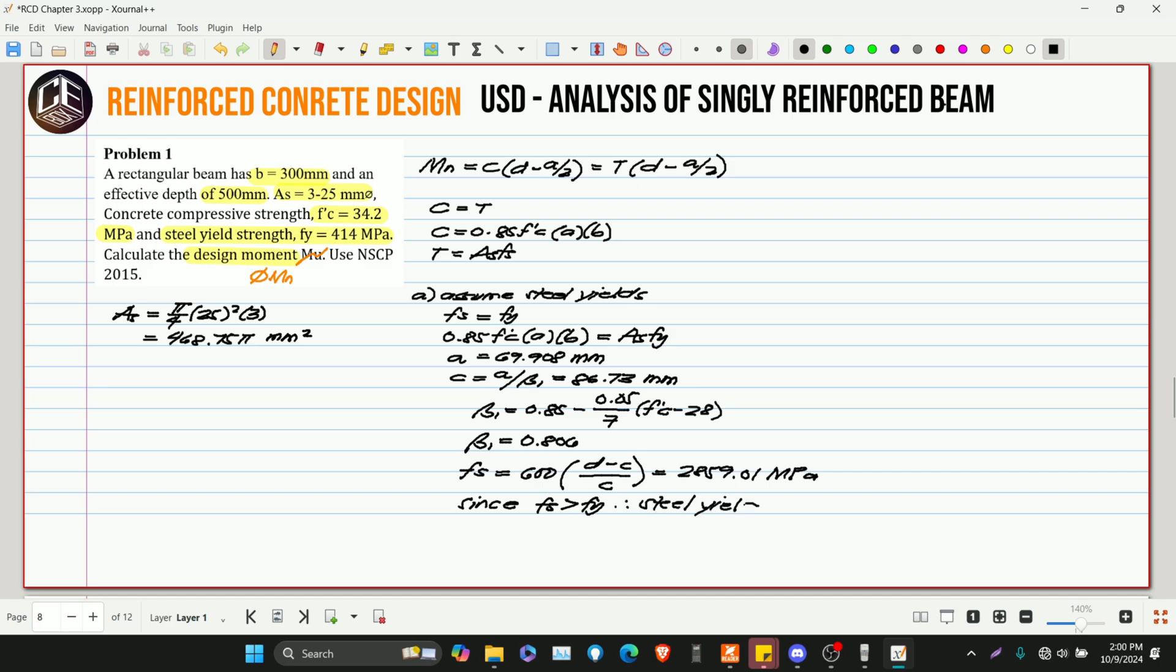So, since ang ating FS ay nag-greater than sa ating FY, therefore, still yields. Lumagpas siya, di ba? Lumagpas siya sa yield strength niya. Kaya talagang mag-yield yung bakal. So, since tama yung ating assumption, ibig sabihin, tama yung nakuha natin na A, tama rin yung nakuha natin na C.